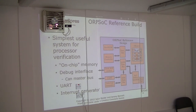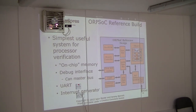The basics for a little ORBSoC system are something which allows the CPU to run — some memory, a bus so it can talk to different things, and a debugging interface. You also need something to allow it to talk to the outside world, like a UART. Other boards have an Ethernet connector with a little core allowing it to talk over the network — you can plug the board in, run Linux, and SSH into it.